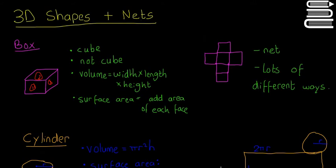The net is what you get if you take a cardboard box and unfold it — what would it look like? This is what one of the nets would look like. There are loads of different ways of drawing it that would still make that box. That's pretty much everything you need to know about the box.